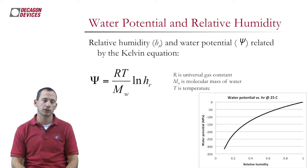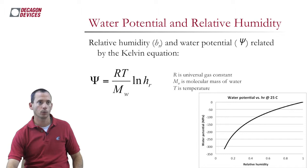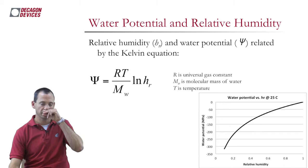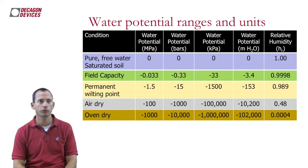Water potential and relative humidity are related by the Kelvin equation from thermodynamics. If you know the relative humidity of a sample and the temperature, you can calculate the water potential: water potential = (RT/M) × ln(relative humidity), where R is the gas constant and M is the molecular mass of water. Conversely, if you know water potential and temperature, you know the relative humidity. This relationship will be important in the Water Potential 201 seminar on measuring water potential.